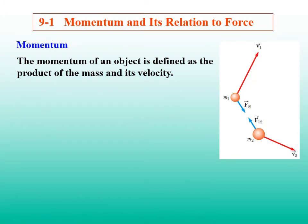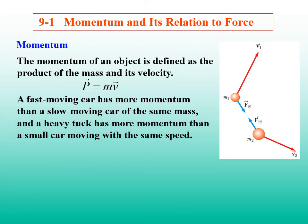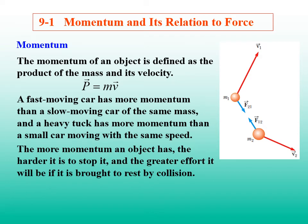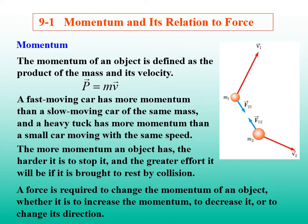Question 1: Momentum and its relation to force. The momentum of an object is defined as the product of its mass and velocity: p equals mv. According to this definition, a faster-moving car has more momentum than a slow-moving car of the same mass, and a heavy truck has more momentum than a small car moving at the same speed. The more momentum an object has, the harder it is to stop, and the greater the impact if it is brought to rest by collision. A force is required to change the momentum of an object.